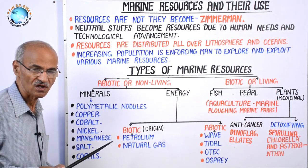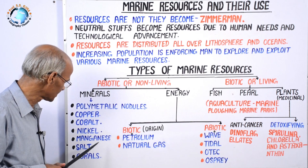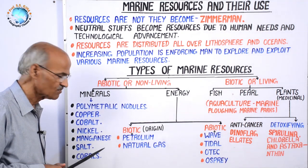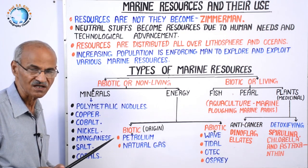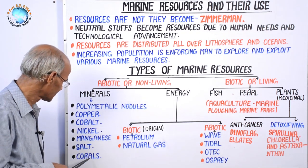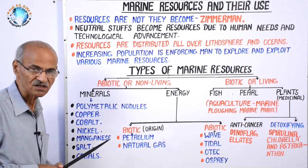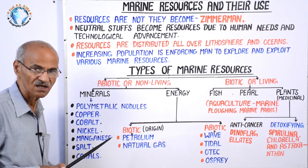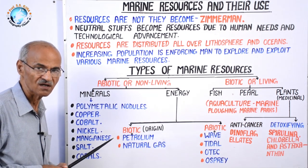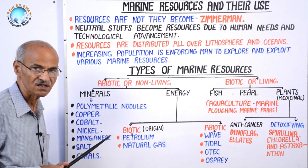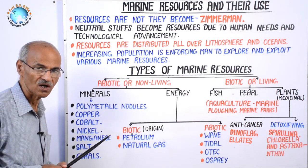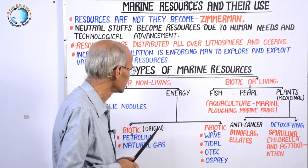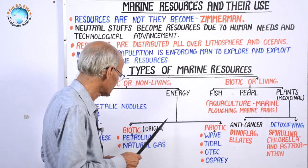Next is coral. We have studied coral separately, but coral is also a resource used by man for tourism and as raw material for the cement industry. The distribution of corals has also been studied — they are found along the Tropic of Cancer and Capricorn, along the eastern continents, on the continental shelf and slope.